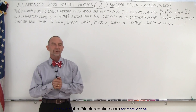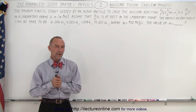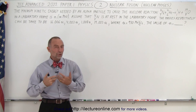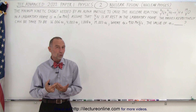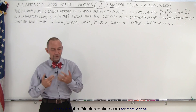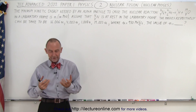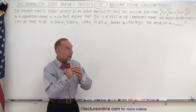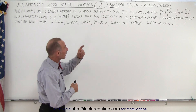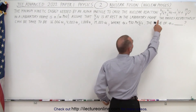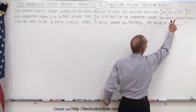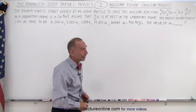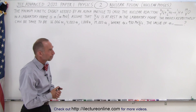Welcome to iLectureOnline. Our next problem deals with nuclear fusion reactions, and in particular we have a helium particle being imparted on a nitrogen isotope, resulting in an oxygen isotope and a hydrogen atom.